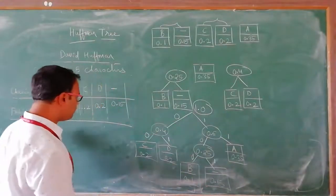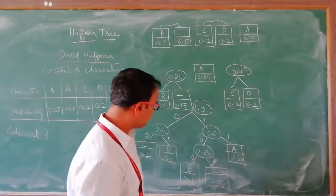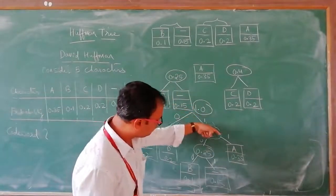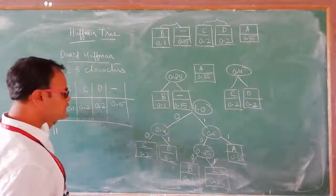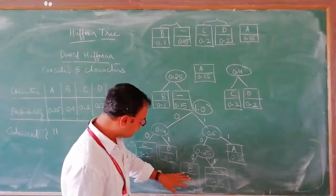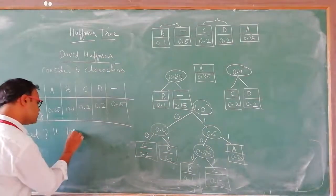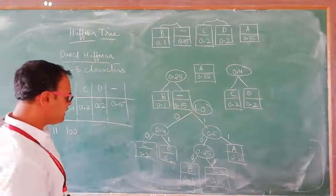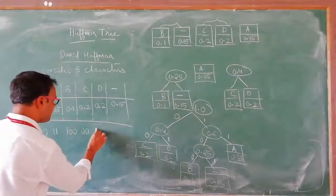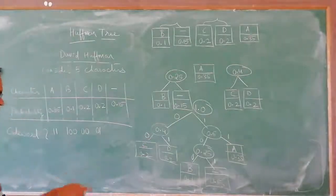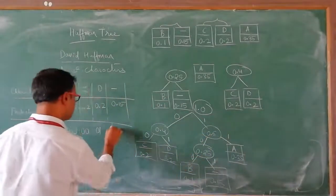Now let us see what is the code word of each character. For A — trace from root to A — the path is 1, 1. So code word of A is 11. For B — trace from root — it is 1, 0, 0. Code word of B is 100. For C — it is 0, 0. Code word of C is 00. For D — it is 0, 1. Code word of D is 01. For hyphen — it is 1, 0, 1. Code word of hyphen is 101.